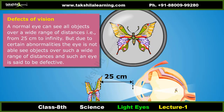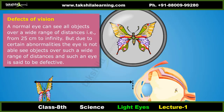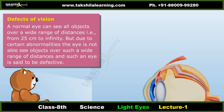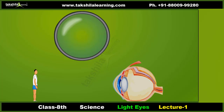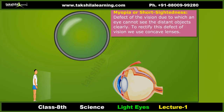A normal eye can see all objects over a wide range of distances, from 25 centimeters to infinity. But due to certain abnormalities, the eye may not be able to see objects over such a wide range, and such an eye is said to be defective. Some of the defects of vision are myopia and hypermetropia.